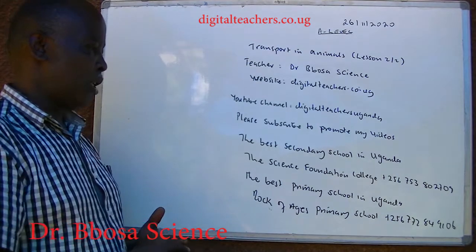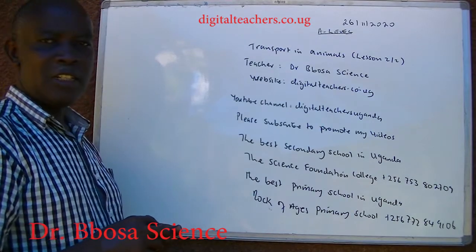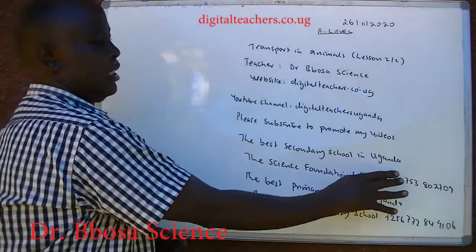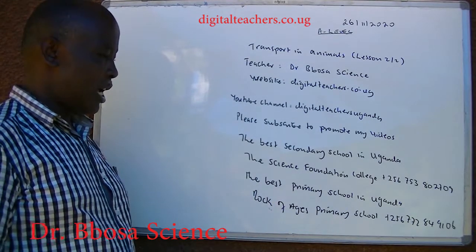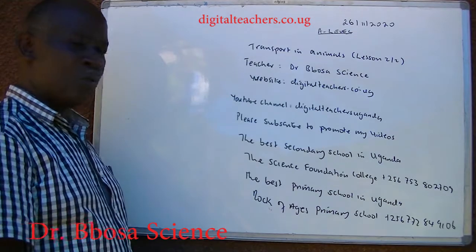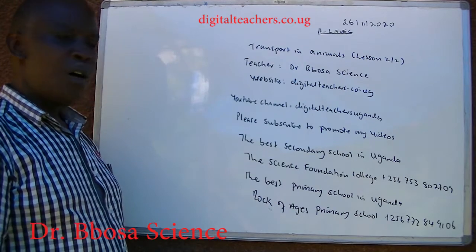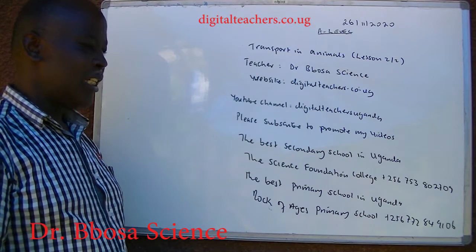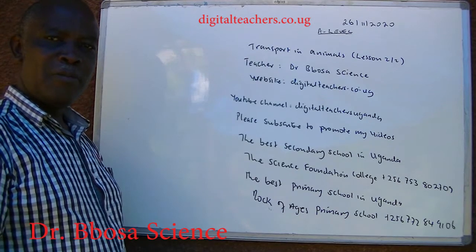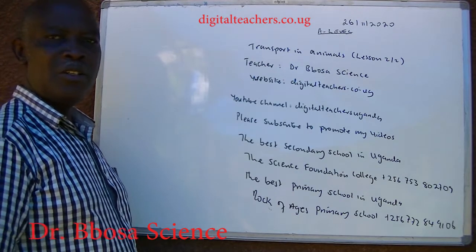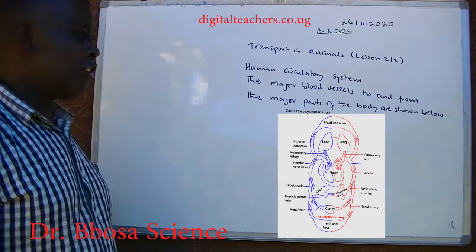The best secondary school in Uganda is the Science Foundation College, plus 256-753-80-2709. The best primary school in Uganda is Rock of Ages Primary School, plus 256-772-84-9106.